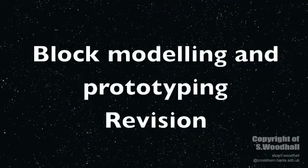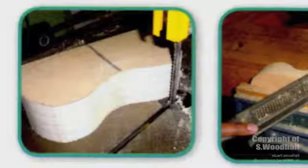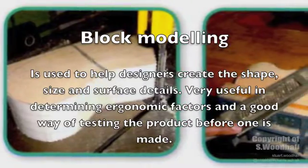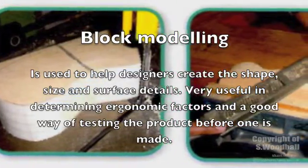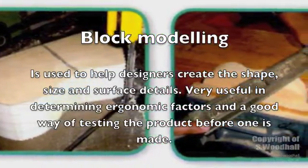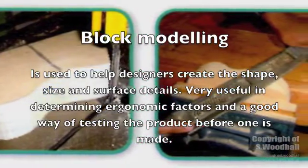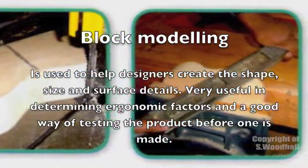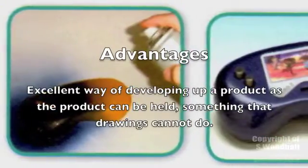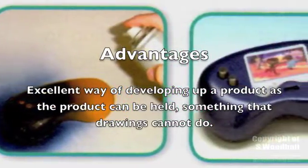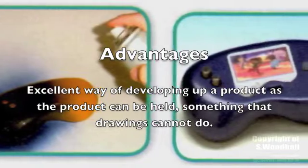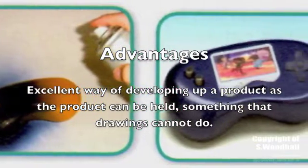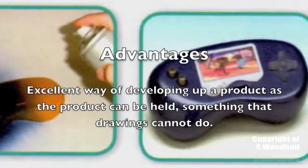In this revision session we're going to be looking at block modeling and basic workshop tools that you need to know for the exam. Block modeling is used to help designers create the shape, size and surface details of a proposed product. They are very useful in determining ergonomic factors and a good way of testing the product before one gets made. These models are a very good development tool that 2D images and drawings struggle to achieve.